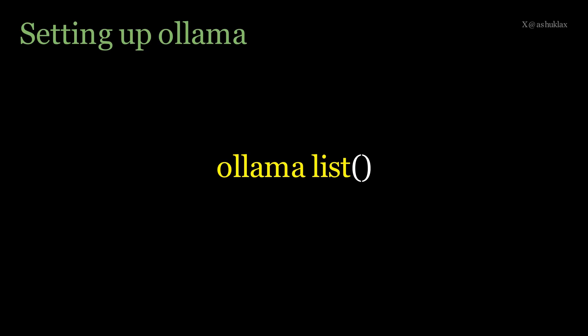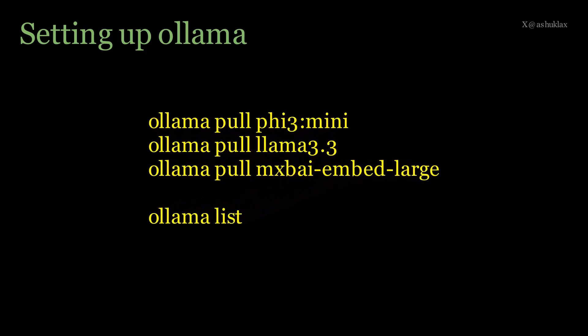If you want to list the available models, just type 'ollama list' in a terminal window — this command shows all the models correctly installed on your machine. To download a specific model to your local machine, issue a command like 'ollama pull phi3:mini', or if you want to install LAMA 3.3, type 'ollama pull llama3.3'. For an embedding model, use 'ollama pull mxbai-embed-large'. Run 'ollama list' again to verify all downloaded models.